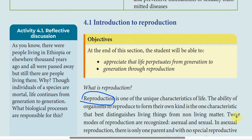Basically, there are two modes of reproduction. The first is called asexual reproduction, and the second is called sexual reproduction.